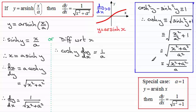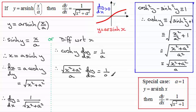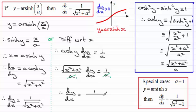Now, we know what cosh y is — we've worked it out. So we therefore have the square root of x squared plus a squared, all divided by a, multiplied with dy/dx equals 1 divided by a. Multiplying both sides by a, the a's cancel. Dividing both sides by the square root of x squared plus a squared gives us dy/dx equals 1 divided by the square root of x squared plus a squared.